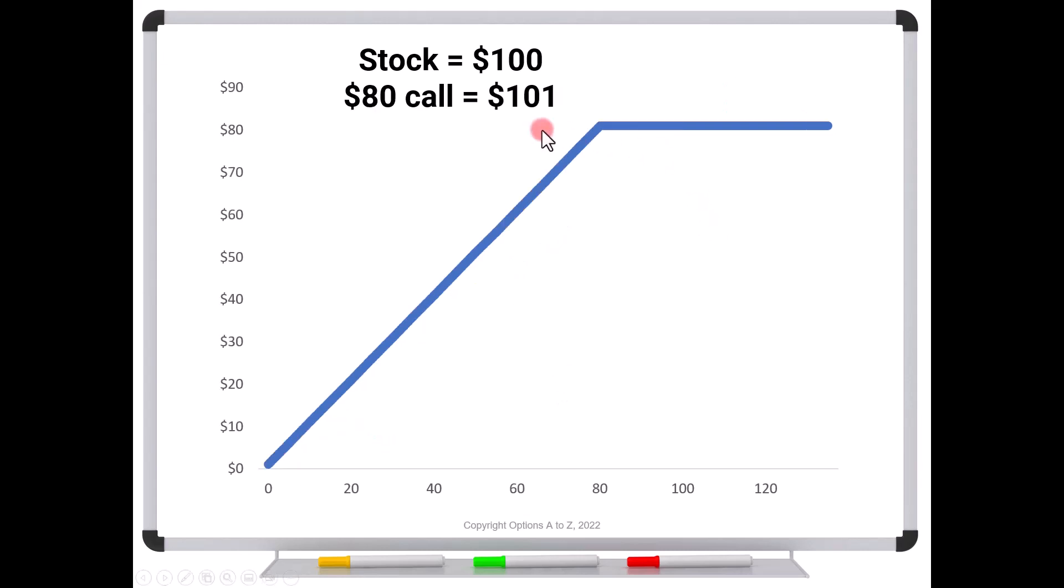Now, what would happen if we had maybe a lower strike? Let's say the $80 call trading for more than the stock's price. Maybe the $80 call goes to one-oh-one. Well, we get a similar thing. Now your maximum gain is 81 and the worst is a dollar. So again, there's no reason to not take this.